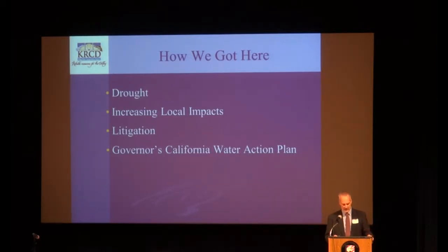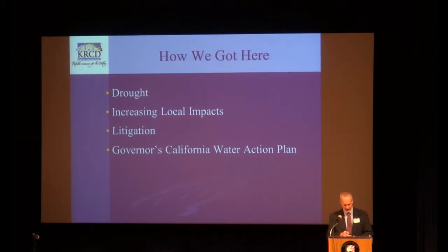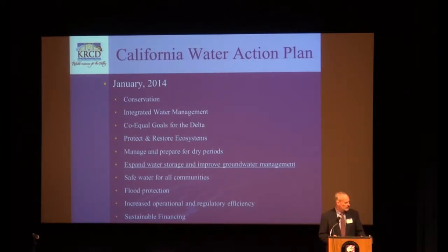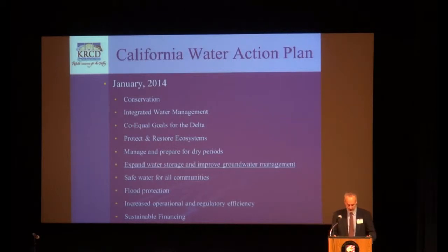We've seen litigation already start in a couple of the places that Ellen referred to. It was fairly clear that the current governor has had an eye on groundwater management since he reestablished his position in Sacramento. That started to take evidence in a couple of different forms — first, the California Water Action Plan, which was released in January of 2014. It included a number of basic objectives, one of which is to expand water storage and improve groundwater management.